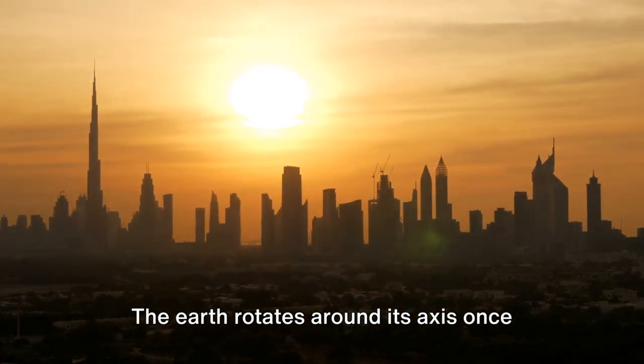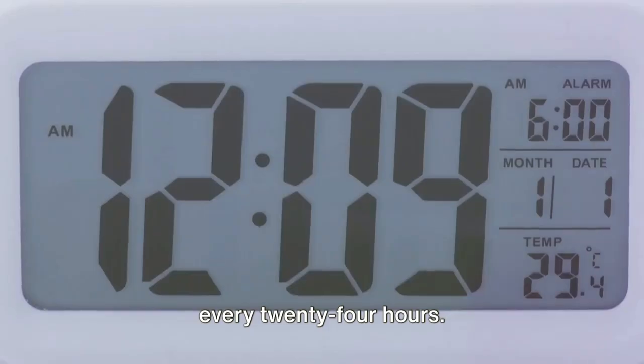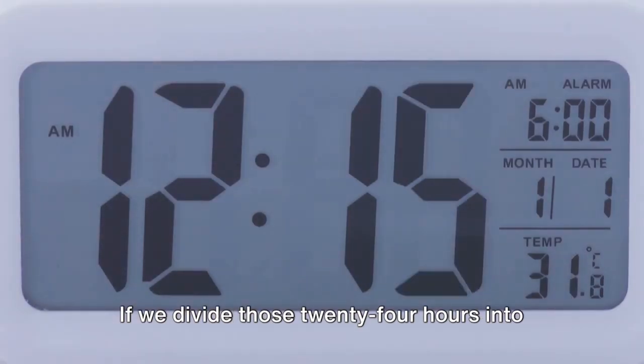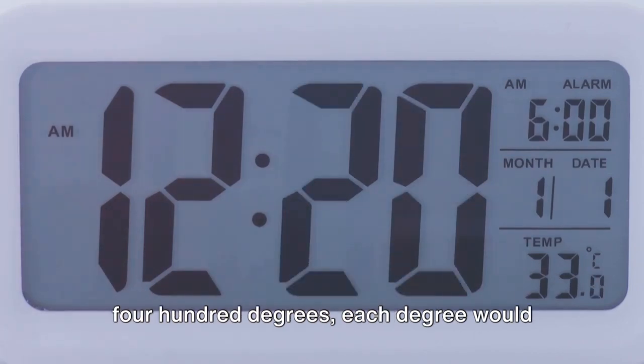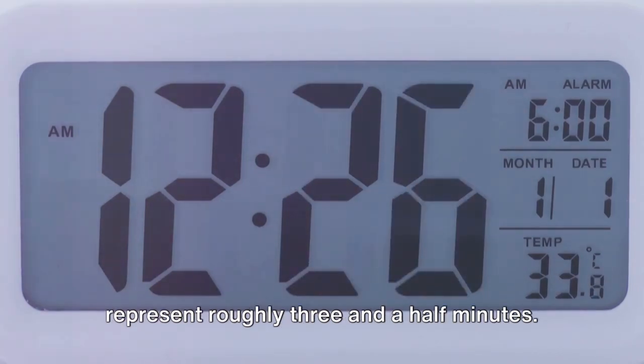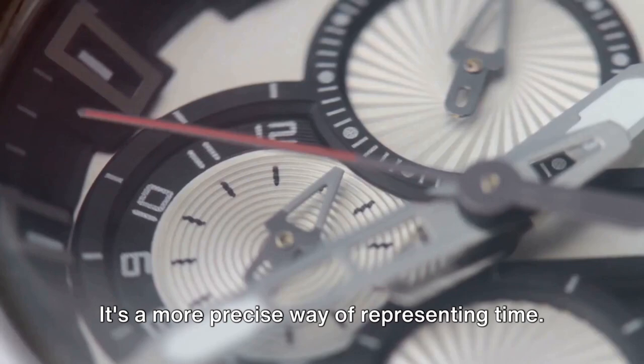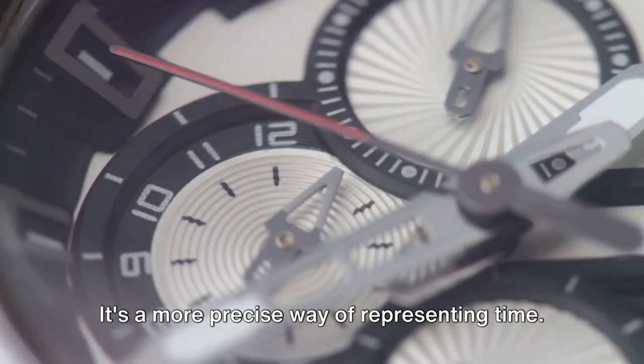Think about it. The Earth rotates around its axis once every 24 hours. If we divide those 24 hours into 400 degrees, each degree would represent roughly three and a half minutes. It's a more precise way of representing time.